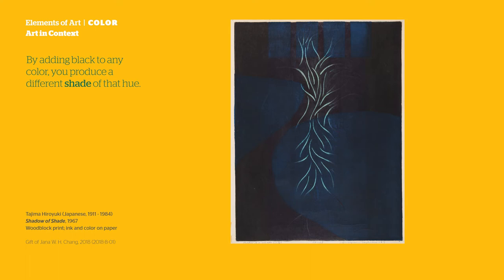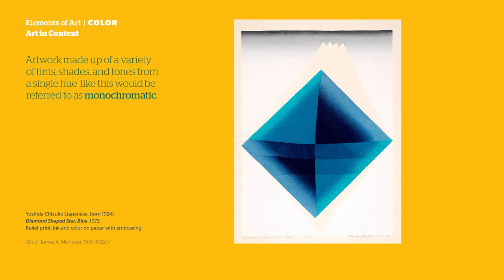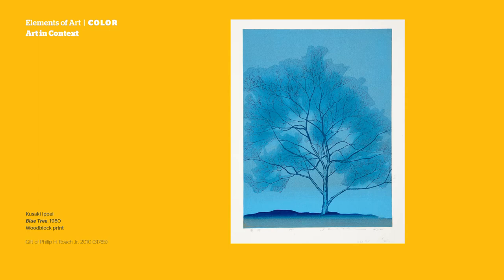By adding white to any color, you produce a different tint of that hue. By adding black to any color, you produce a different shade of that hue. By adding black and white — or gray — to a color, you produce a new tone. Sometimes an artwork will be made up of a variety of tints, shades, and tones all from a single hue. An artwork like this would be referred to as monochromatic, or one color.